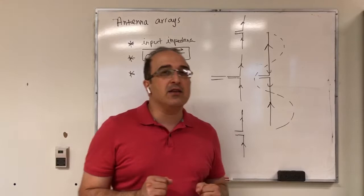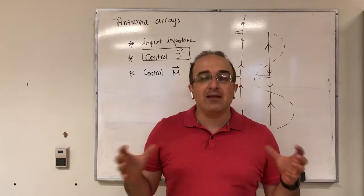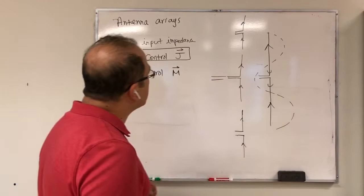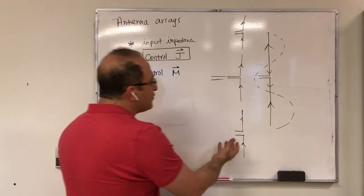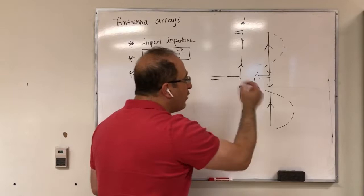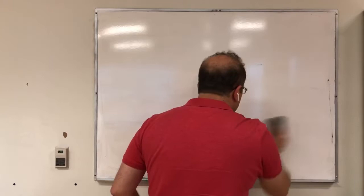Instead of starting with the general N-element framework, I'll make a specific example: two antennas in a system. We'll look at the radiation and understand the advantages. If you want a certain current distribution over a larger area, an array is easier than a single standalone structure.